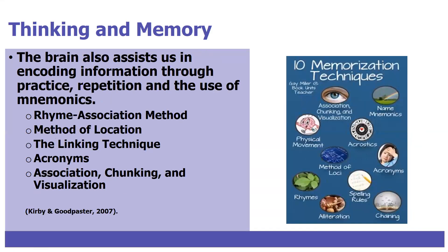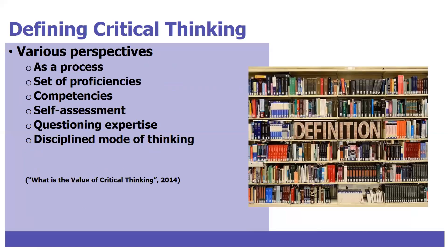The brain also assists us in encoding information through practice, repetition, and the use of mnemonics. So how can we improve our long-term memory? Mnemonics are devices that can help us encode information and make recall easier. Some popular memory techniques include rhyming, method of location, linking, acronyms, association, chunking, and visualization.